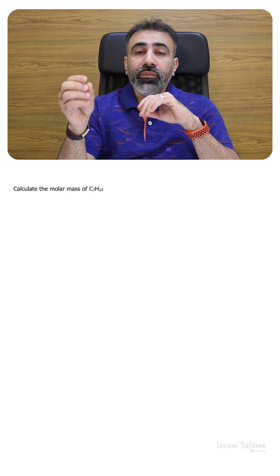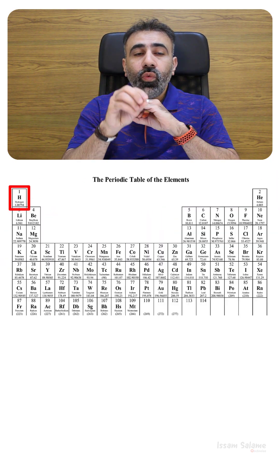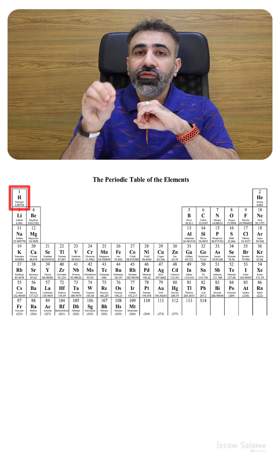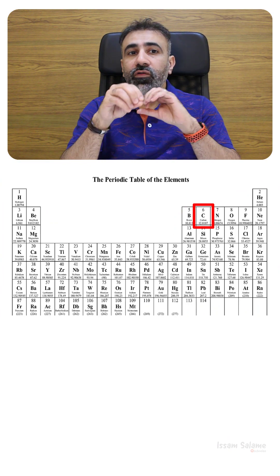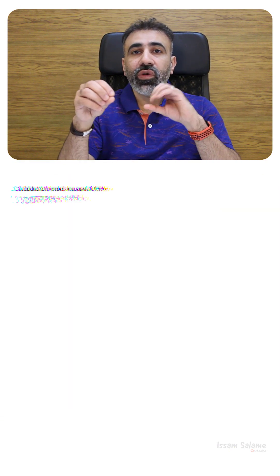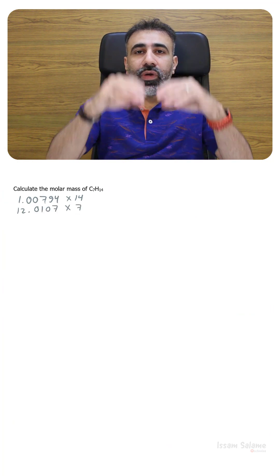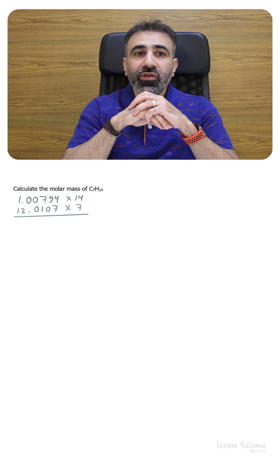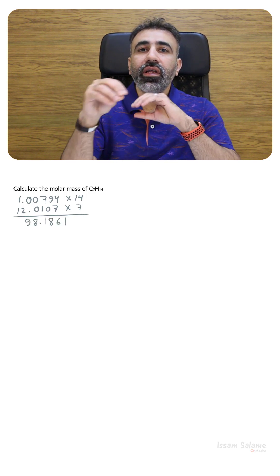Calculate the molar mass for C7H14. To find the molar mass we use the periodic table. The molar mass for hydrogen is 1.00794, and we have 14 atoms of hydrogen, so we multiply by 14. The molar mass for carbon is 12.0107, and we multiply by 7 since we have 7 atoms of carbon per molecule. Adding them all, the molar mass for C7H14 is equal to 98.1861 grams per mole.